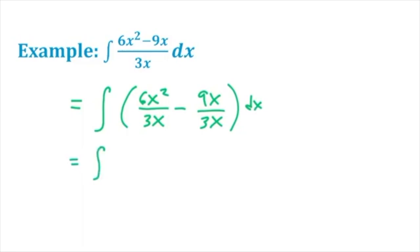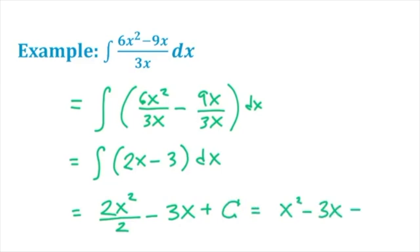Our first term would clean up to just 2x, our second term cleans up to -3. Applying the power rule now, we'll get 2x²/2 - 3x + c, or simply x² - 3x + c.